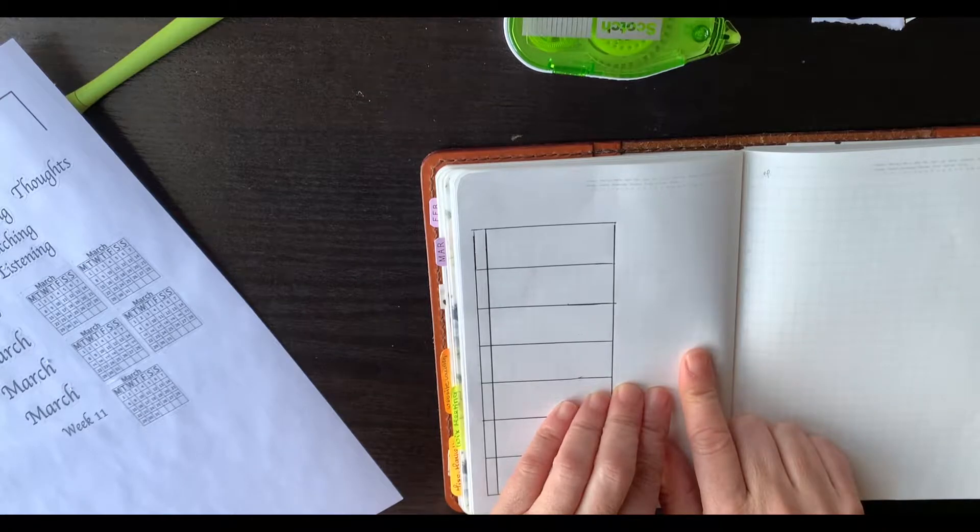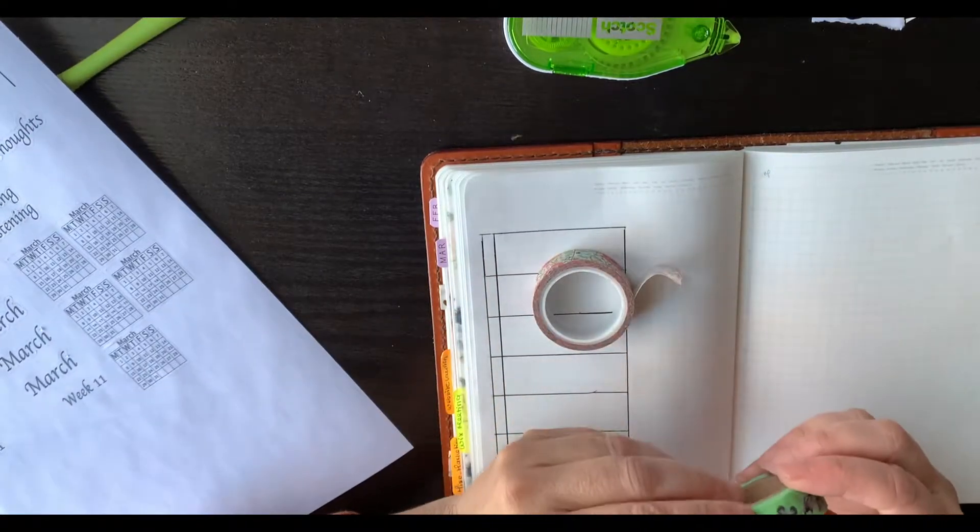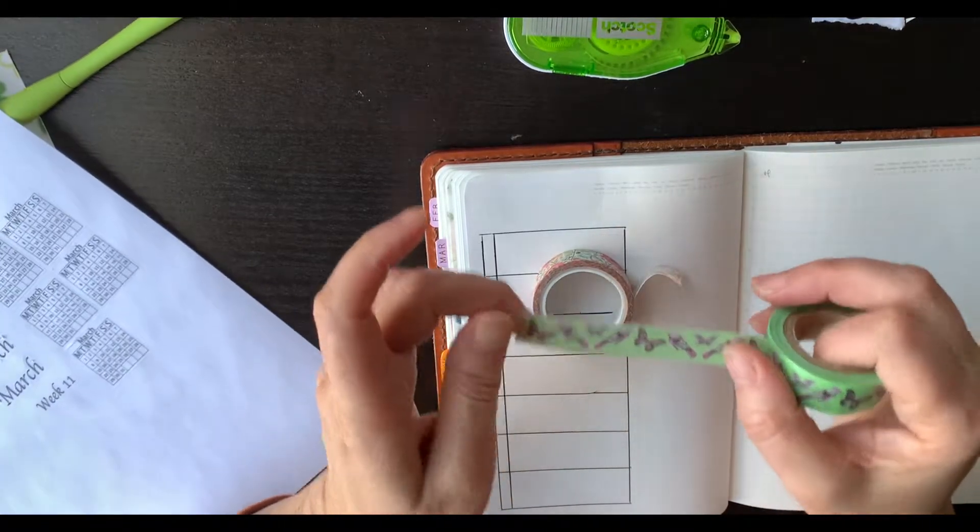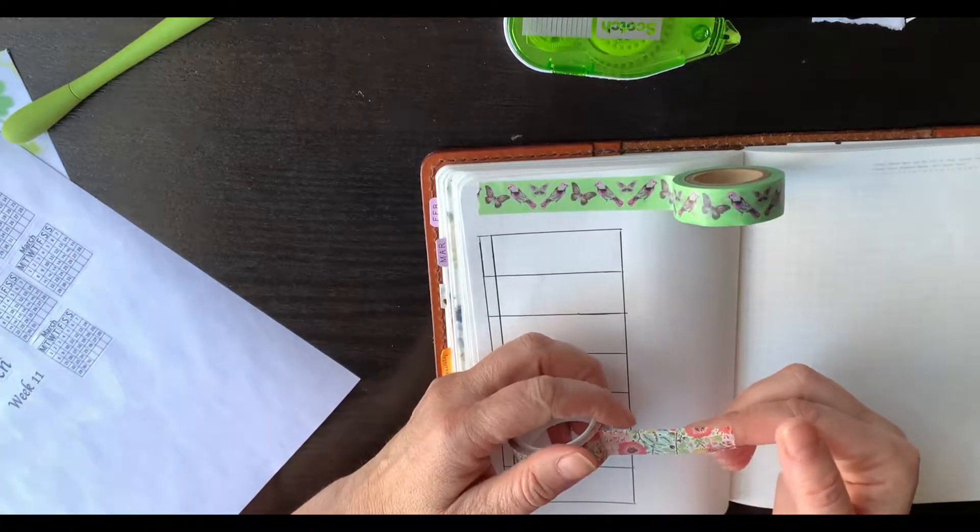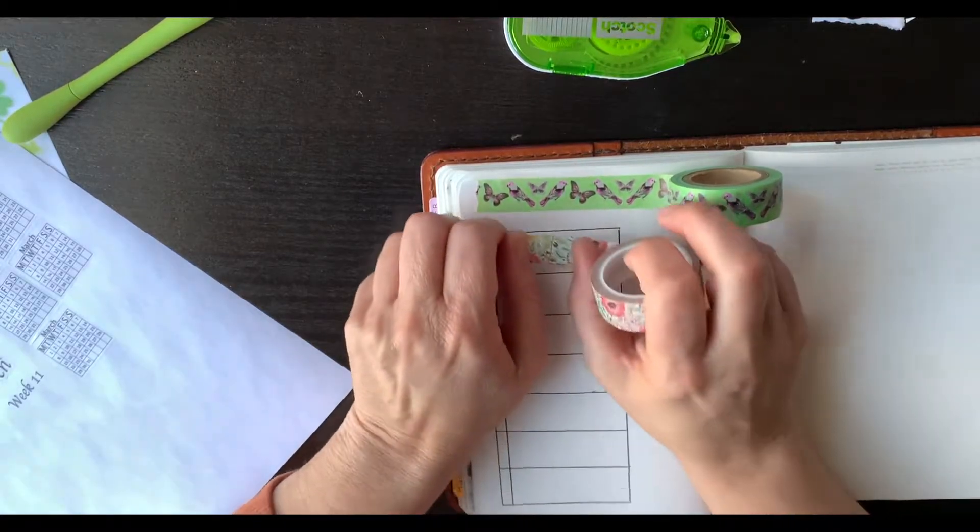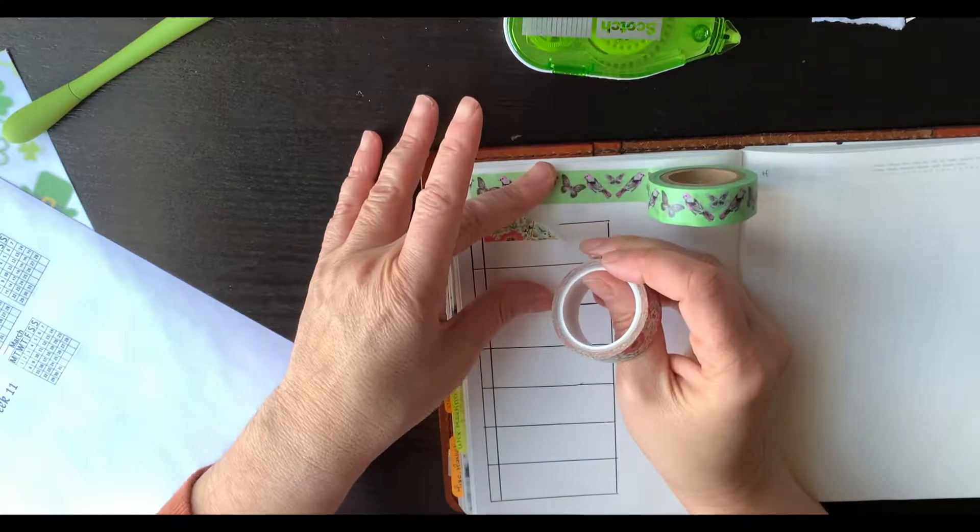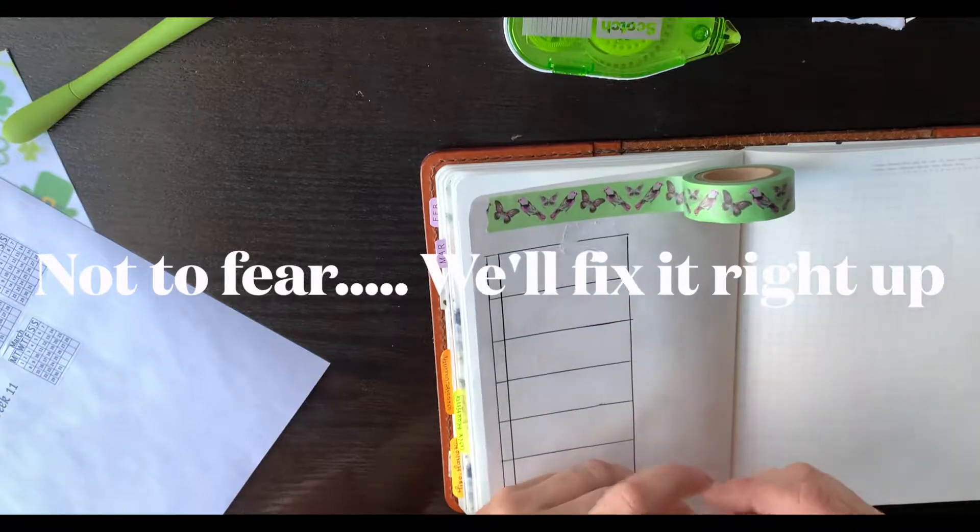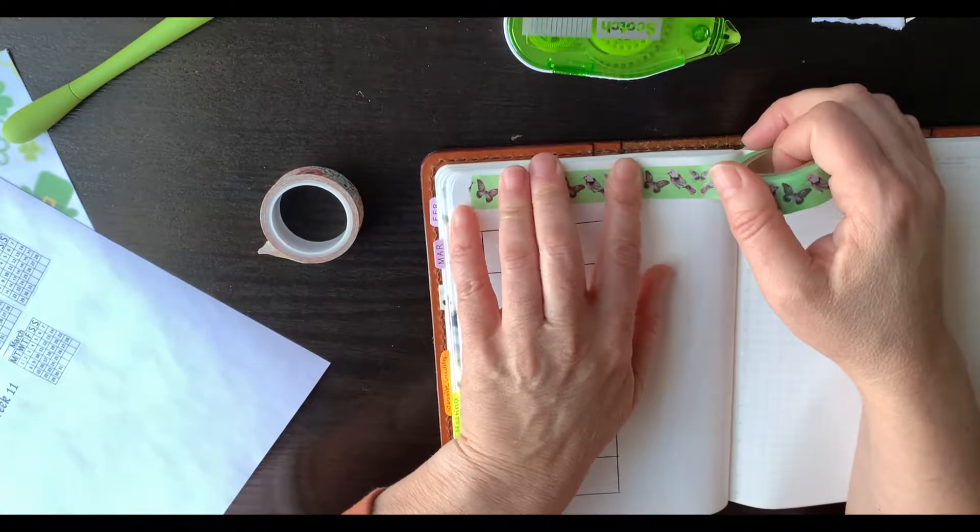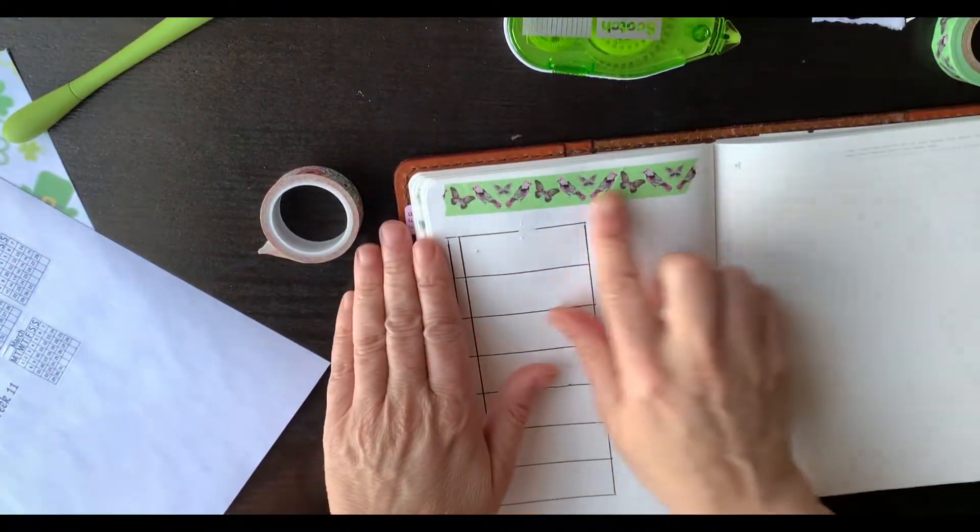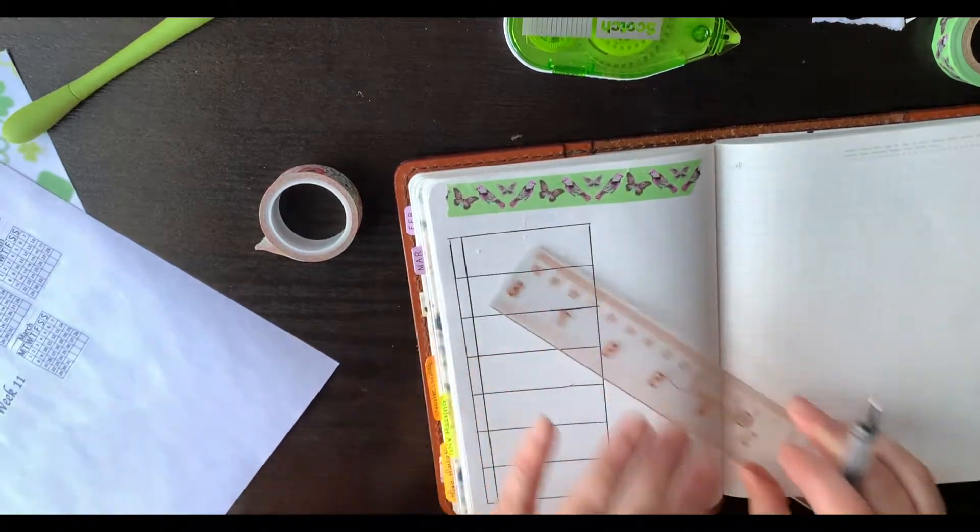I do have to go grab washi tape. I'll be back. So I have this one, this one, but it's a really bright green, but it does have butterflies and birds. And maybe, maybe I like it or, which way does this one go? This one. You know what? I've never used the butterflies and birds. Eek. I'm just going to use that one.